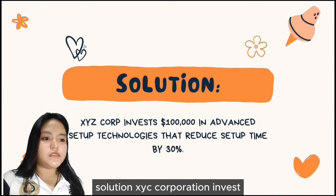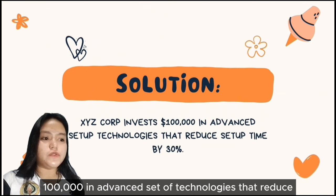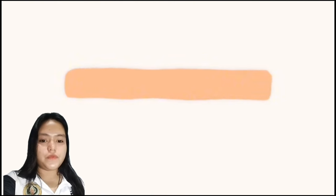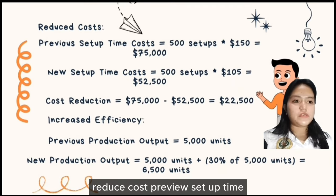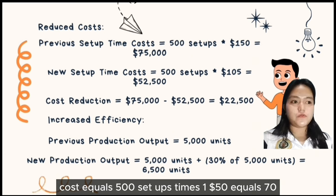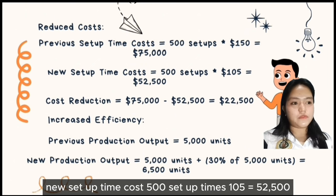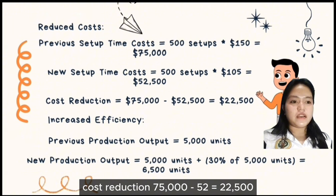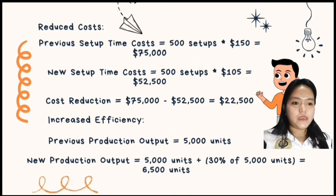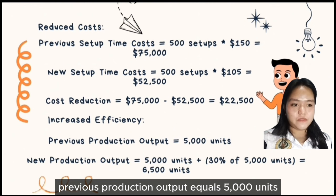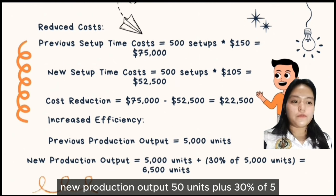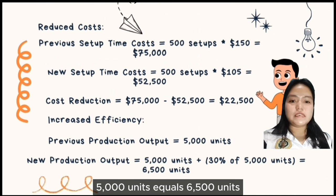Solution: XYZ Corporation invests $100,000 in advanced setup technologies that reduce setup times by 30%. Previous setup time cost: 500 setups × $150 = $75,000. New setup time cost: 500 setups × $105 = $52,500. Cost reduction: $75,000 − $52,500 = $22,500. Previous production output: 5,000 units. New production output: 5,000 + (30% × 5,000) = 6,500 units.